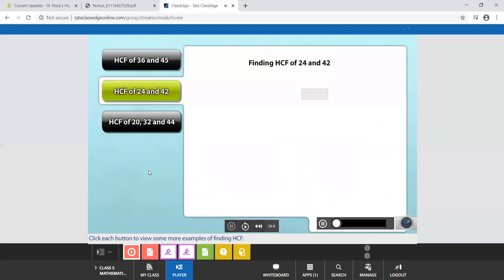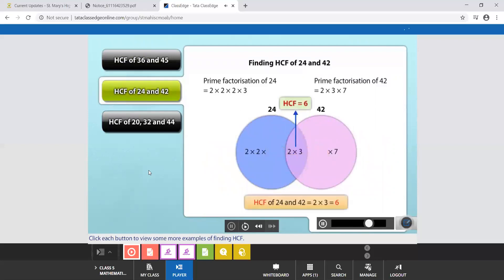Let's find the HCF of 24 and 42. You will notice that 2 into 3 is common in both numbers. This means that 6 is the highest common factor of 24 and 42 and is therefore the HCF.